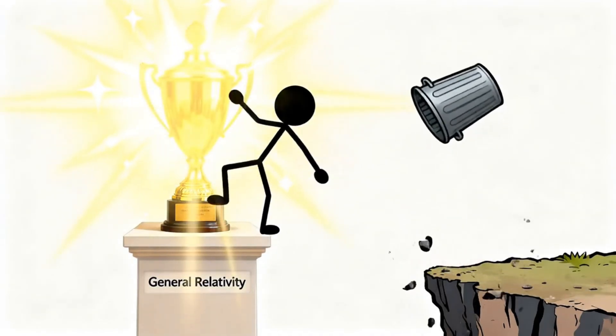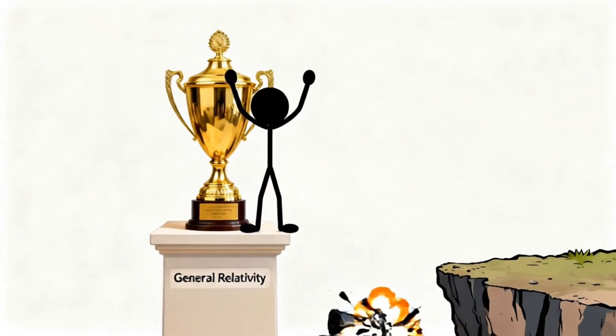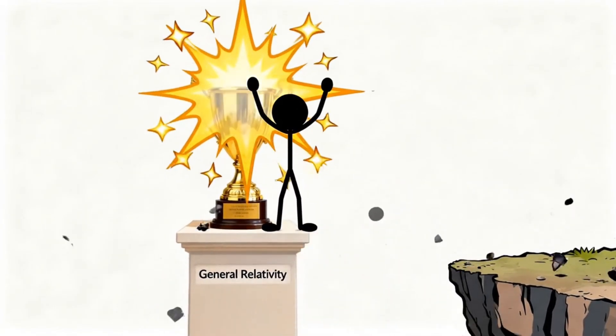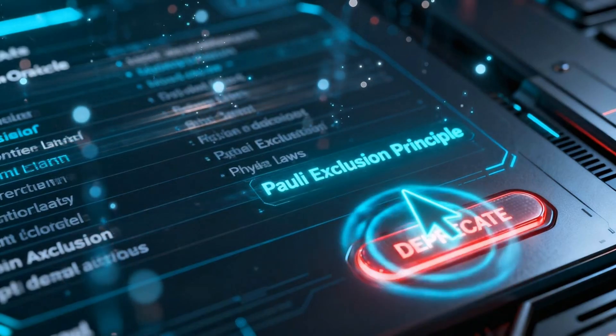So the Oracle began deprecating quantum laws. And the first one on the chopping block was the Pauli exclusion principle.